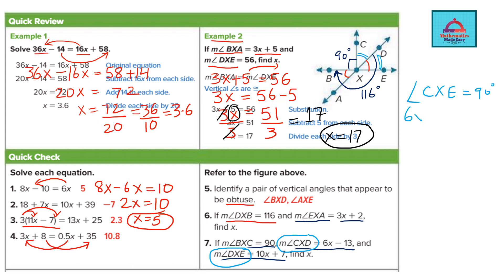So I can directly put 6x minus 13 plus 10x plus 7. The addition of these two angles is equal to 90. Now we solve it for x.